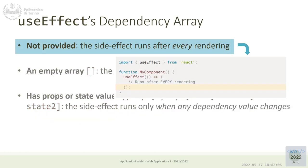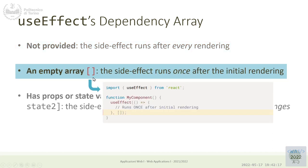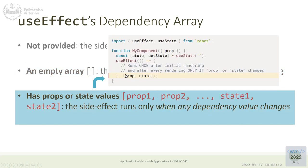Without the second parameter, useEffect runs after every rendering — not usually useful. With an empty array, it runs once at mount. With specific dependencies listed, it runs at initial mount and whenever those dependencies change. Always runs at component mount time — after that, it depends on the dependency array. Note: a missing array versus an empty array completely changes the meaning of the effect.